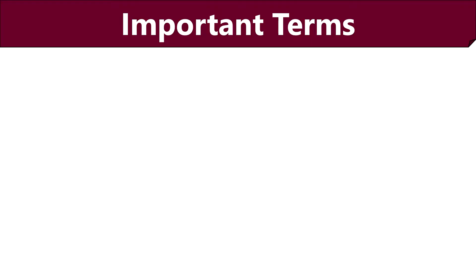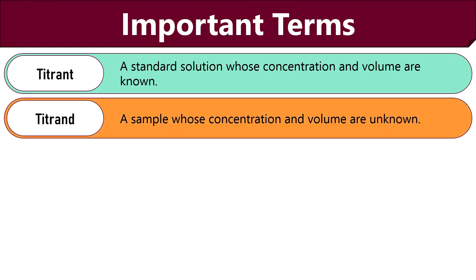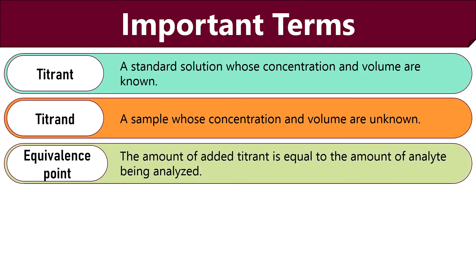Now before proceeding to the concept of acid-base titration, there are a few important terms that we should know. First, a titrant is known as a standard solution whose concentration and volume are known. Then the analyte is a sample whose concentration is unknown and it is a solution to which a titrant reacts. Equivalence point is the stage in which the added titrant is chemically equivalent to the analyte or sample that is to be analyzed.